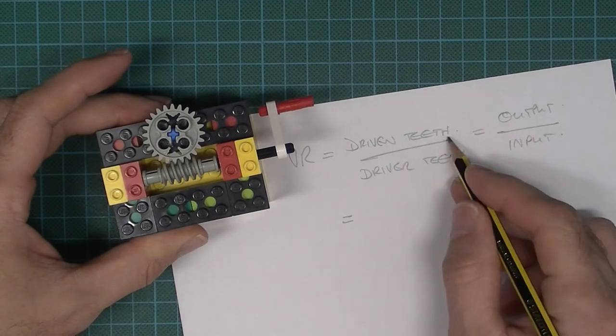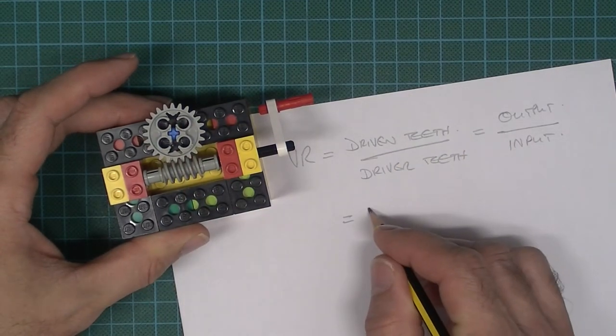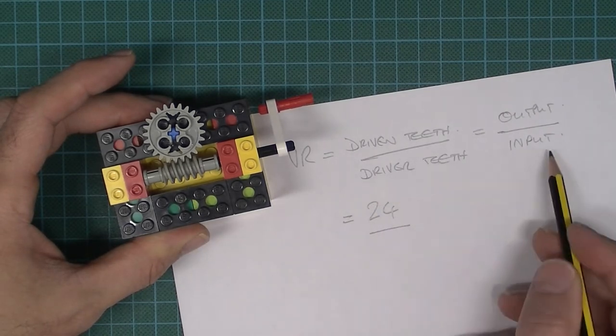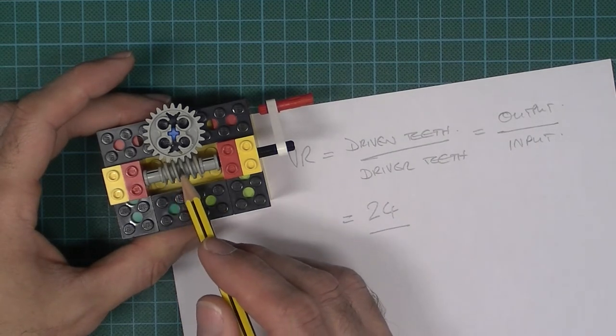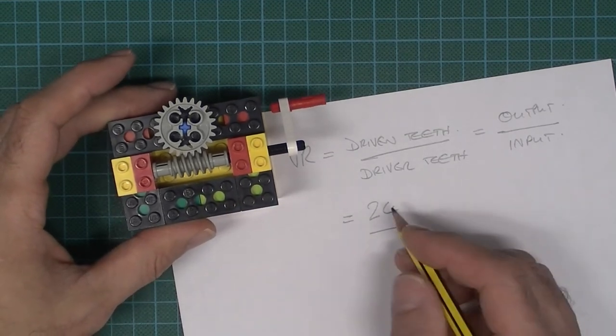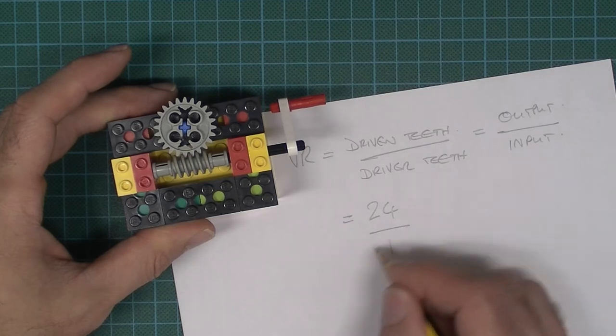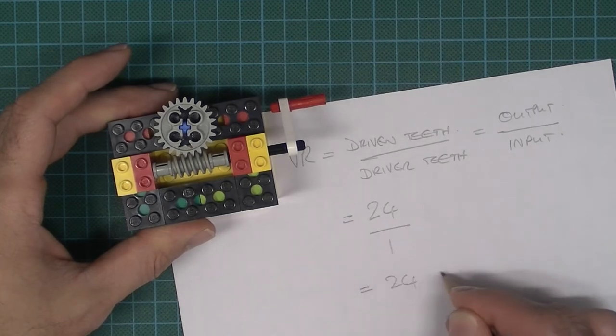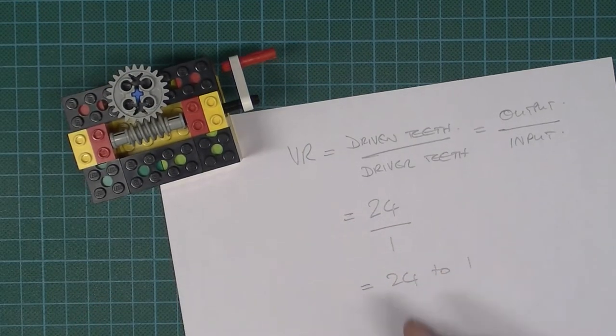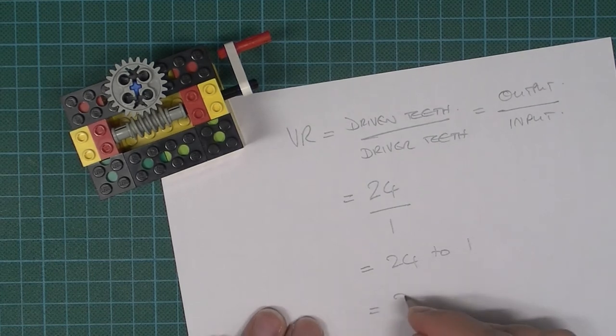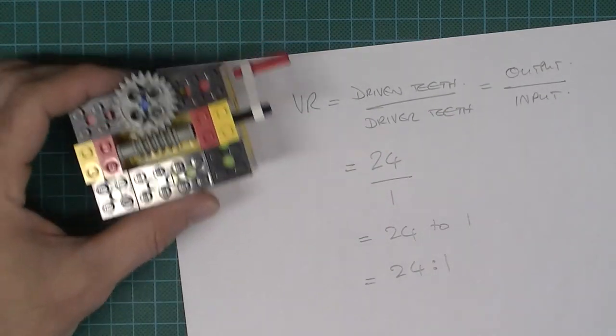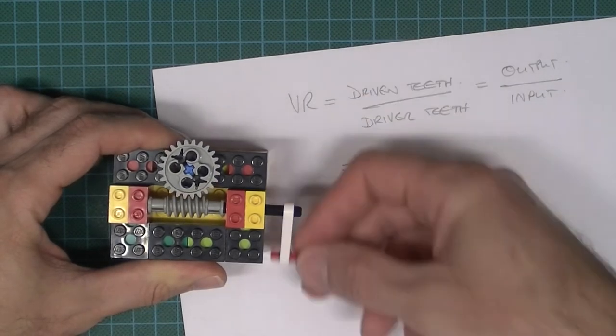So the output, the number of teeth that's being driven ultimately, that's 24. And this is going to confuse some people: the driver teeth, the input. Now don't count like one, two, three, four, five like that. No, it's just one single tooth. So that's just 24 over 1. If you wanted, you could write 24 to 1—it's a velocity ratio. You can express ratio as a fraction or you can do it like that, but if you do it like this it's probably more likely that you do 24:1, which just means the velocity ratio is 24 to 1. In other words, this has to be turned 24 times for this to go around once.